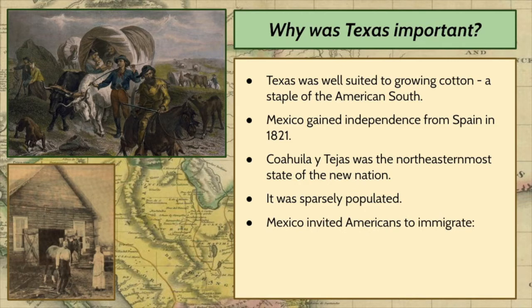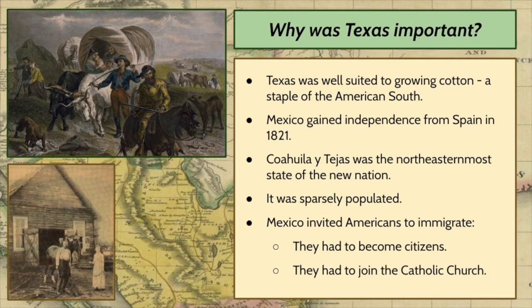Americans were invited to immigrate into Mexico, but they had to agree to a few things. They had to become citizens of Mexico, they had to learn Spanish, they had to obey Mexican laws, and they had to join the Catholic Church. Those are all things the American settlers had to agree to before they were allowed to move into Texas and become settlers. However, a lot of the settlers who came agreed to these things but did not take them particularly seriously.